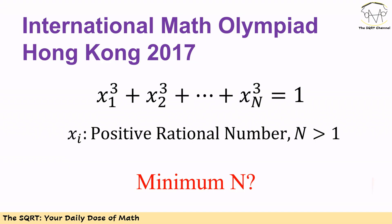Hello everyone, in this video we are going to talk about another problem from International Mathematics Olympiad Hong Kong 2017. In this problem, we have the sum of Xi cubed equals 1, for i equals 1 to n, and each Xi is a positive rational number. We want to find the minimum n that satisfies this equation.